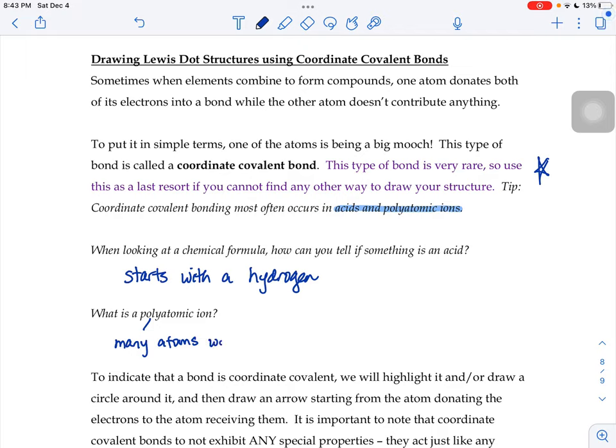So if you see a group of atoms, for example NO3 minus 1, that's nitrogen and oxygen with a charge. SO4 minus 2, that's sulfur and oxygen with a charge. If you have acids or polyatomic ions, it's possible that coordinate covalent bonding might be happening.